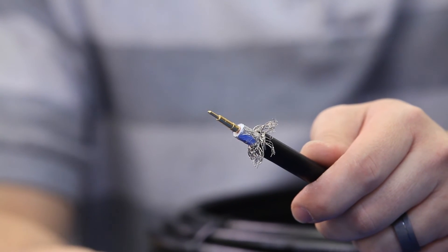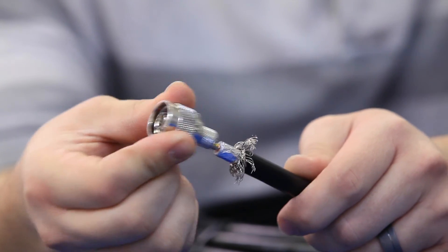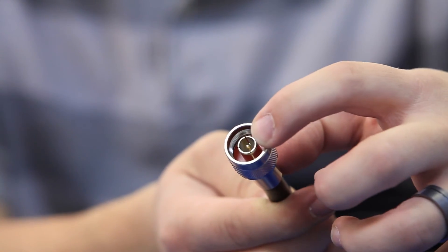With the center pin soldered on, slip the connector onto the cable. Make sure that the center pin slips through the center of the connector and is flush with the top of the connector.